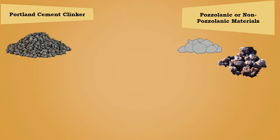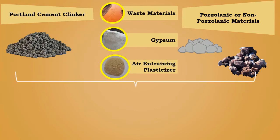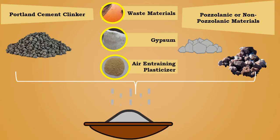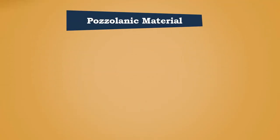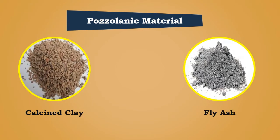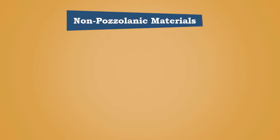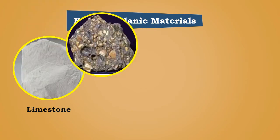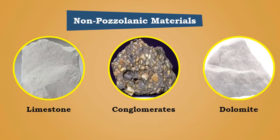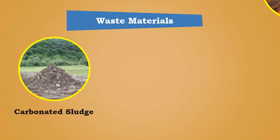The manufacturing also includes waste materials, gypsum, and air-entraining plasticizer in suitable proportions. The pozzolanic materials include calcined clay, fly ash, etc. The non-pozzolanic materials include limestone, conglomerates, dolomite, etc. The waste materials include carbonated sludge, mine tailings, etc.